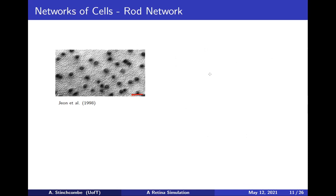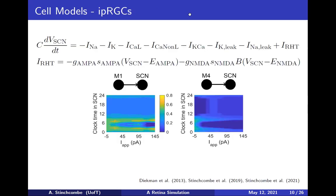That concludes the aside into IPRGCs and the SCN. Moving to the next level: a network of electrically active cells on the retina. There was a question: clock time CT means hours relative to when you think sunrise is. If sunrise is 6 AM, then CT 0 is 6 AM and CT 6 is noon. Zero to 12 is the subjective day and 12 to 24 is the subjective night on a 12:12 day length.